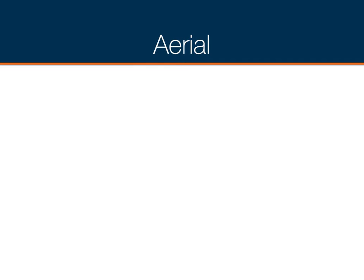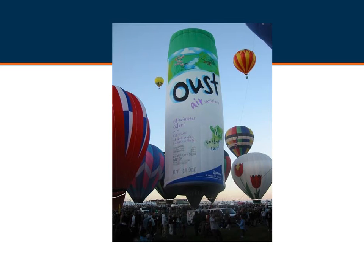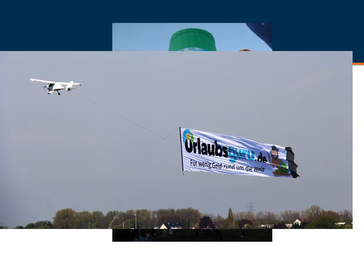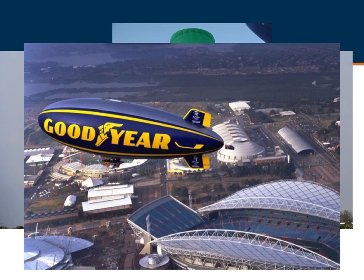Aerial advertising is a subcategory of out-of-home. We've all seen planes flying along beach areas in Southern California with messages on them — that's a traditional kind of aerial advertising. You also have balloon advertising, planes carrying banners, and blimp advertising, which is another form of aerial outdoor advertising.